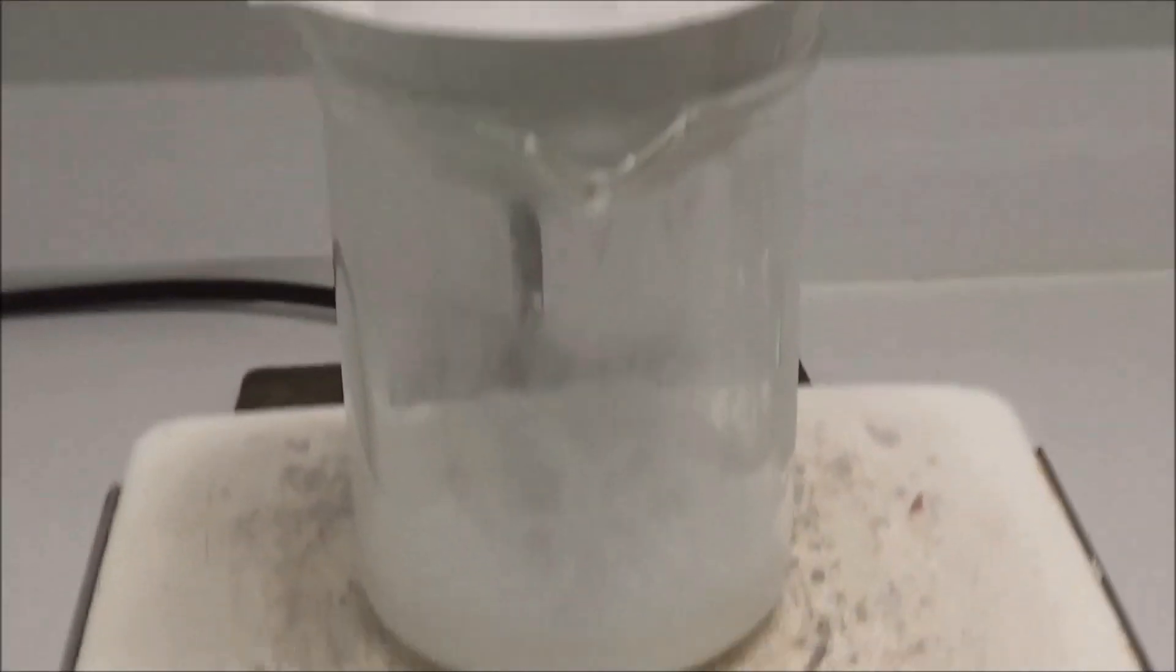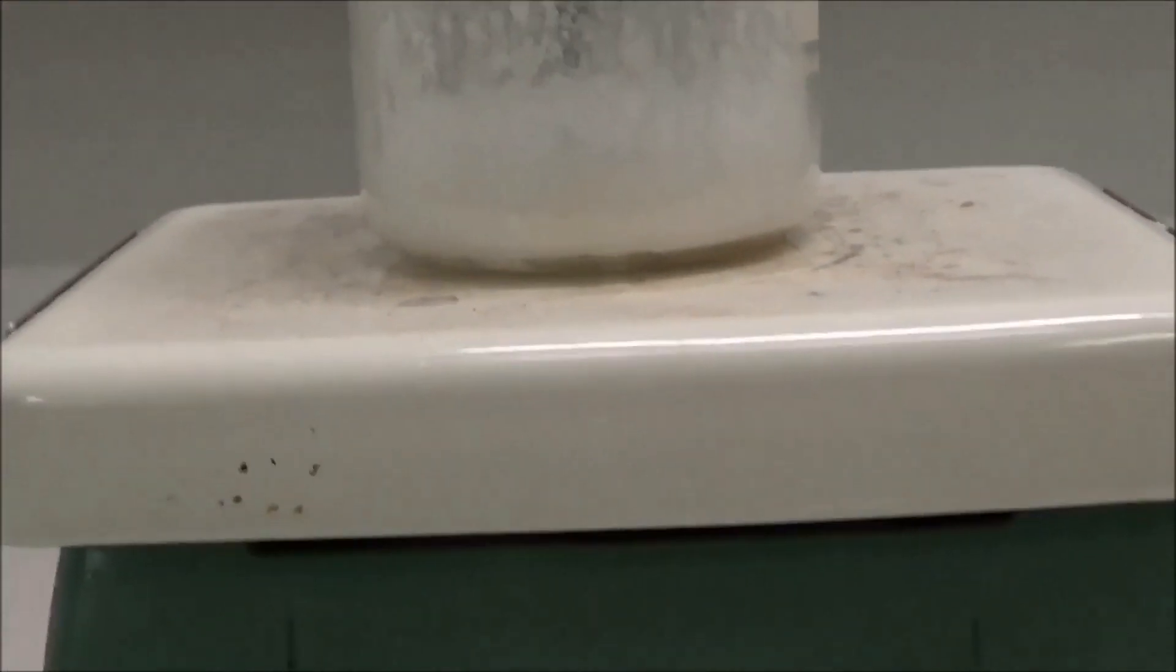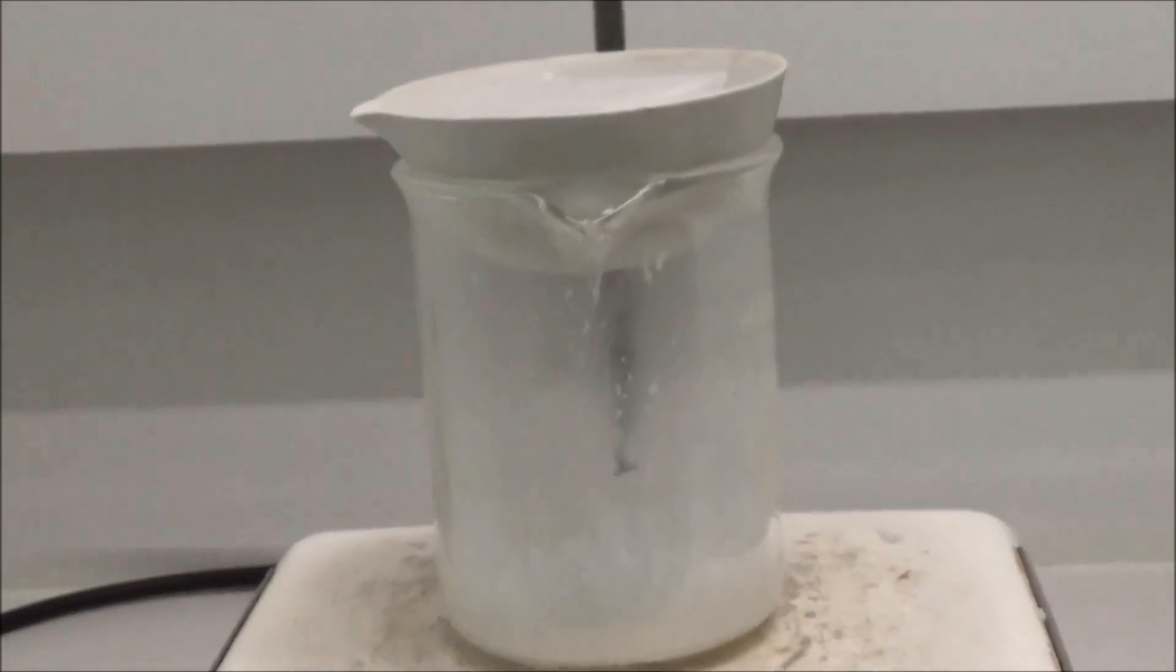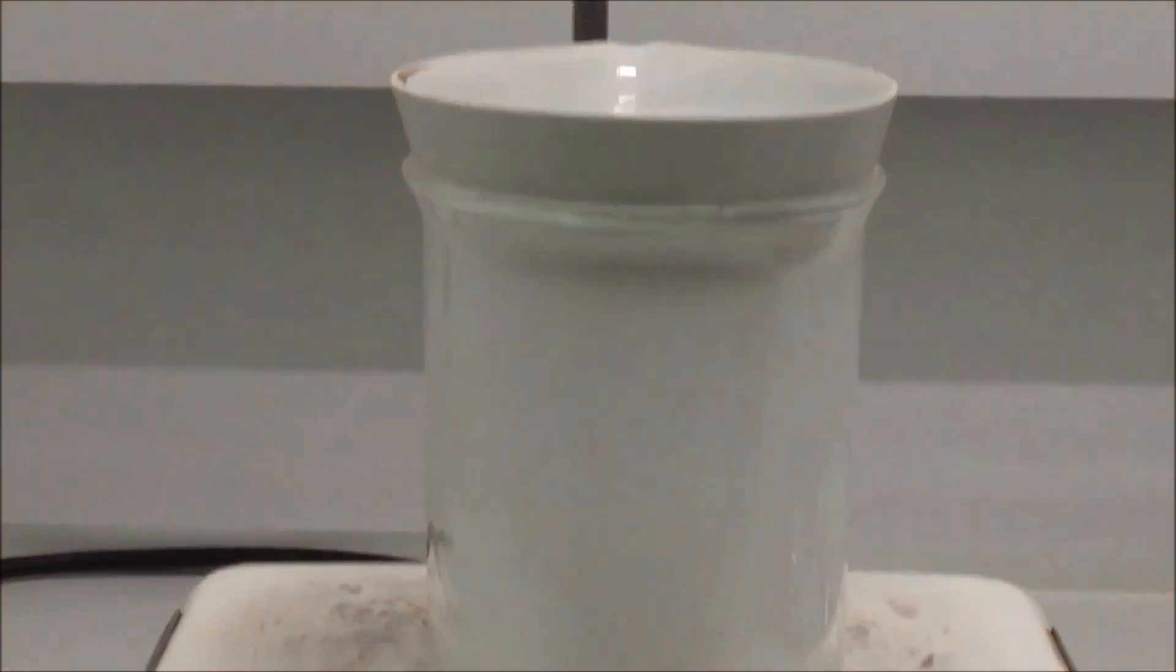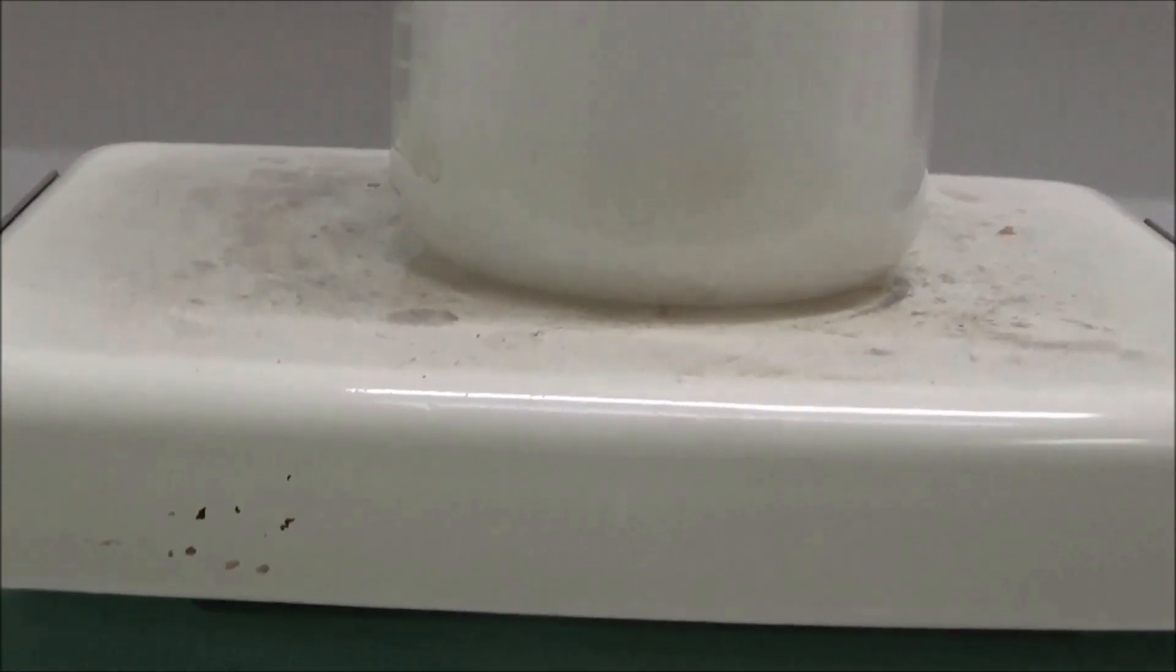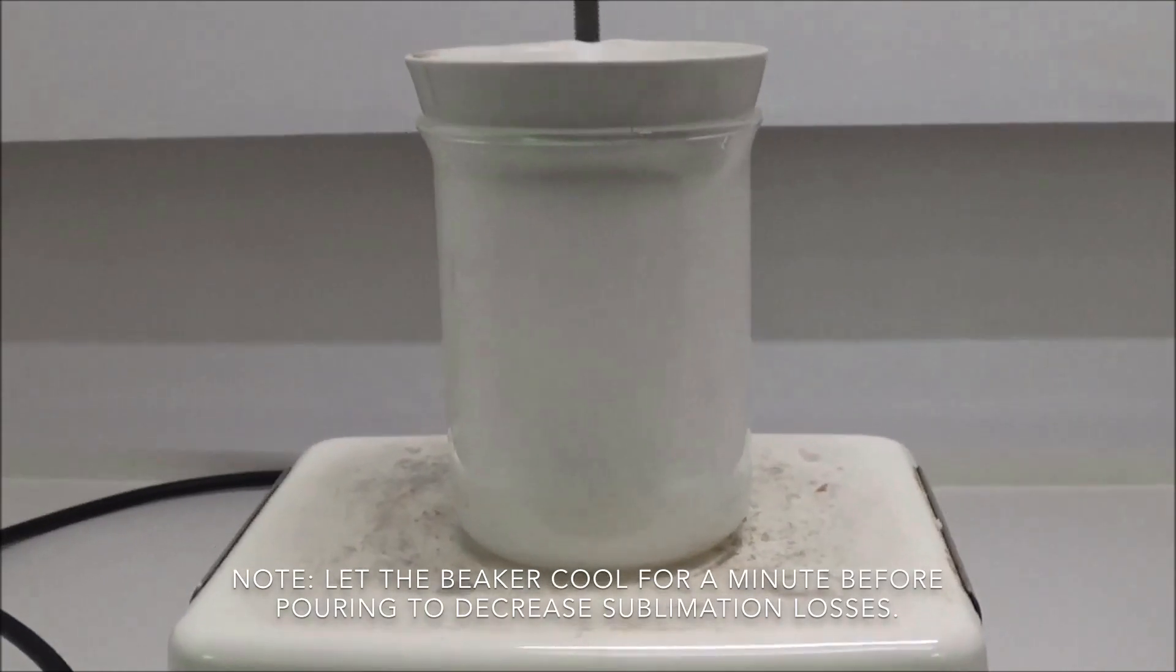After about 30 minutes, we reached this state. Water was no longer being emitted. An evaporating dish was placed on top to contain the subliming phthalic anhydride. The solid then melted and we poured it out onto the piece of aluminum foil to collect.